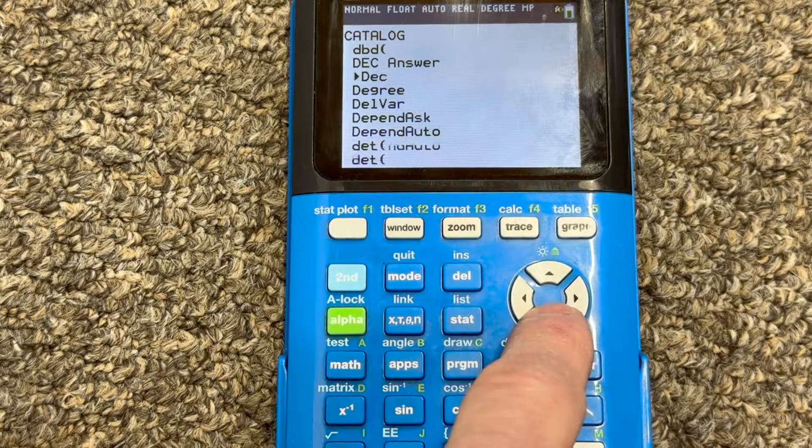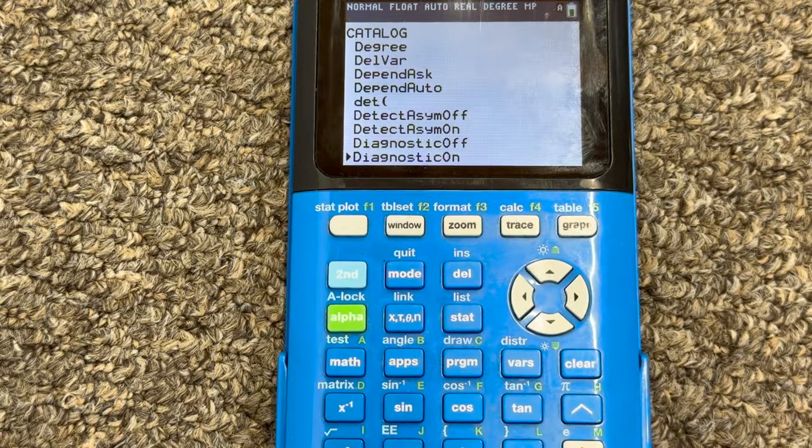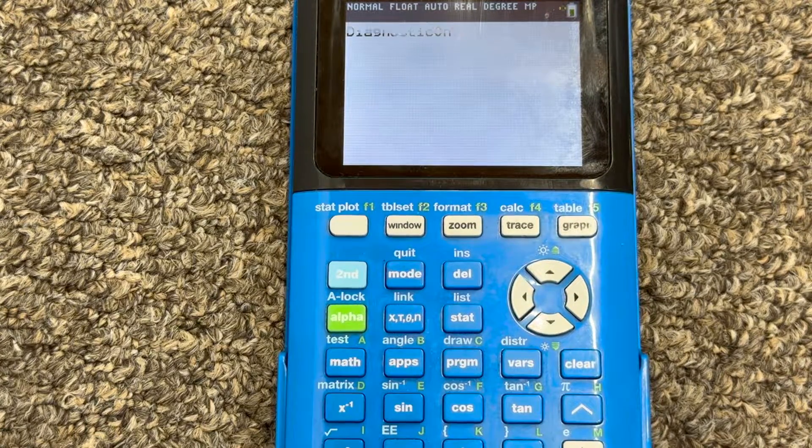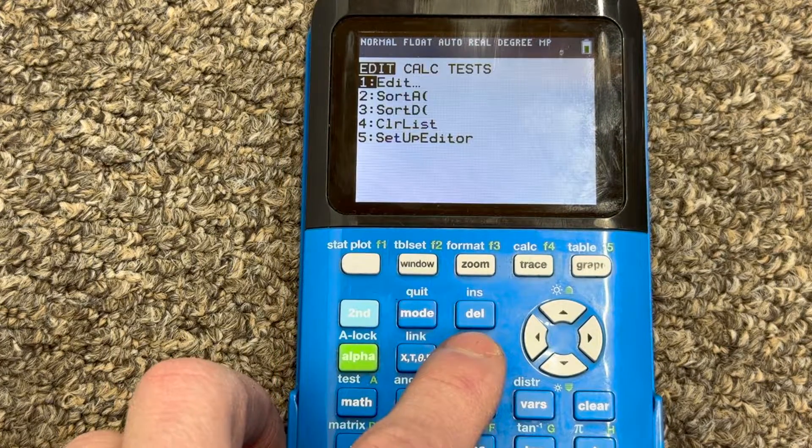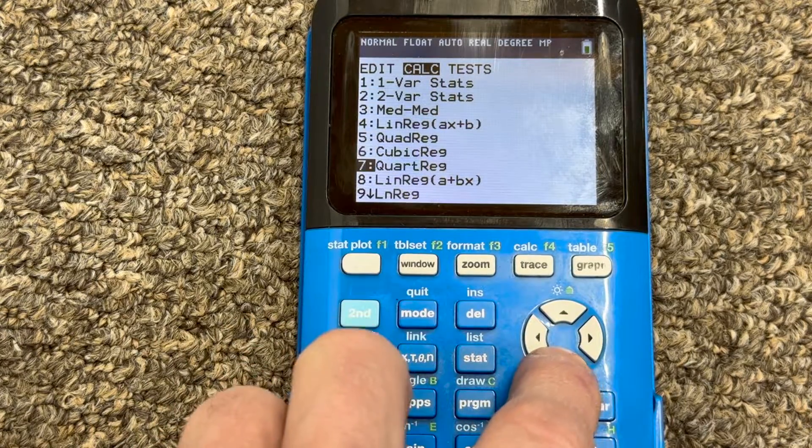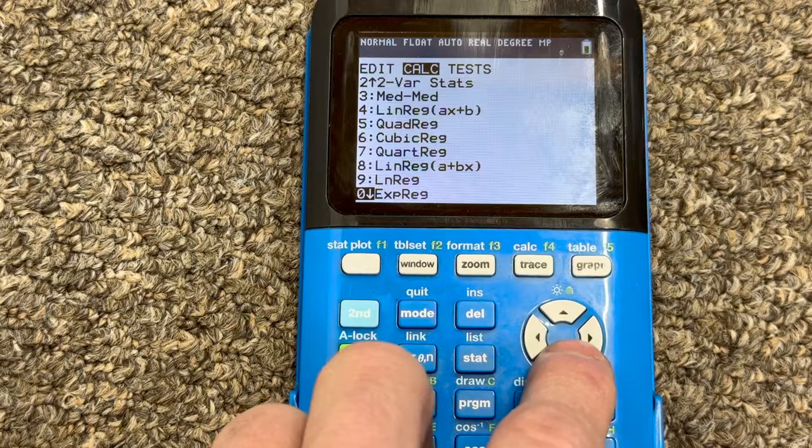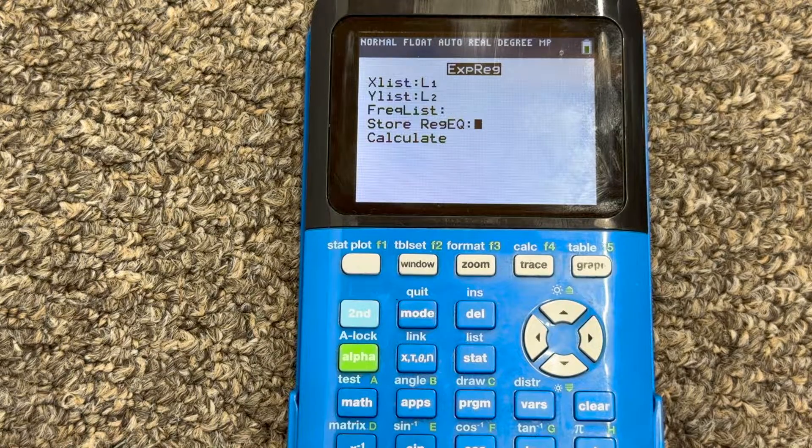And when we get there, we're going to turn that on. See, it says on. I'm going to press enter, and I'm going to press enter again. See, it says done. So now when you go to do that again, let's just review. So stat, calculate, I'm going to go down to exponential regression, so that's number 10. Enter, list one, list two, I'm just pressing enter.